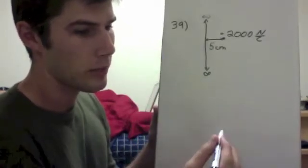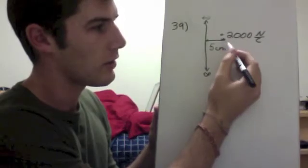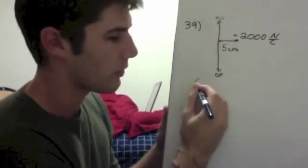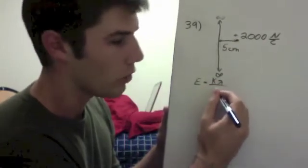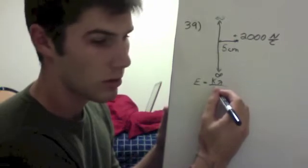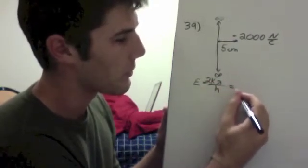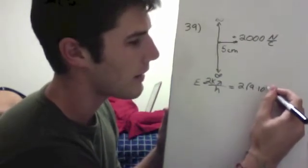We're going to be looking at the electric field at the point. The electric field is going to be 2k lambda over h, where k is 9 times 10 to the 9th.